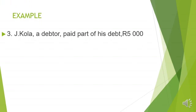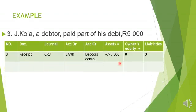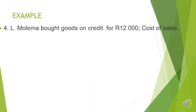Another example: Jaycola, a debtor, paid part of his debt — R5,000. Again, money is received from a debtor, so Bank is debited and Debtors' Control is credited. You can write this as plus/minus R5,000. Nothing happens to Owner's Equity or Liabilities.